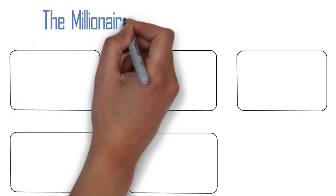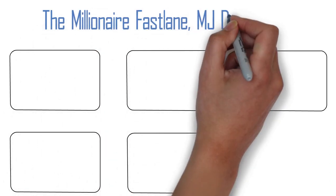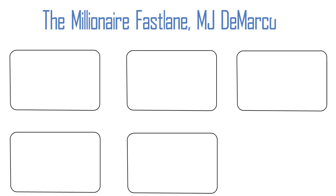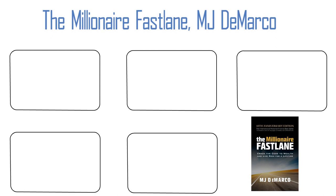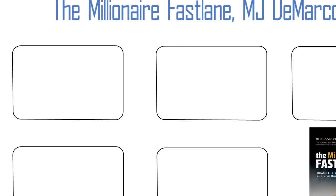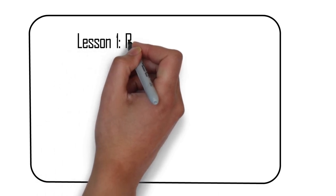Today we are discussing the groundbreaking personal finance book The Millionaire Fastlane by MJ DeMarco. This book challenges conventional wisdom about wealth creation and provides a fresh contrarian perspective on how to achieve financial freedom. In this video we'll be summarizing the key lessons from the book and showing you how you can apply them to your own life.